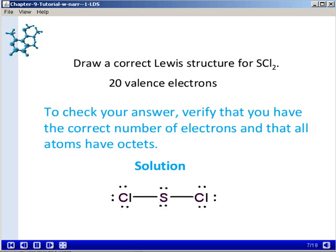To check your answer, verify that you have the correct number of electrons, the right number of dots, 20 in this case, and that all three of the atoms have an octet of electrons and thereby satisfy the octet rule.